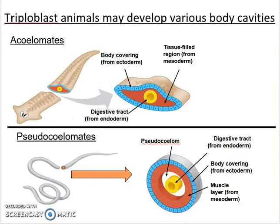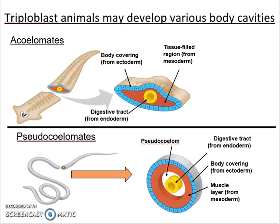Among the triploblasts, they form an internal body cavity known as a coelom, which is basically a cavity that lies between the digestive system and the wall of the organism. Some triploblasts form a coelom that isn't quite complete. Looking at the acoelomate — the 'A' at the beginning means 'without' — these organisms don't have a true body cavity distinguished from the rest of the body.